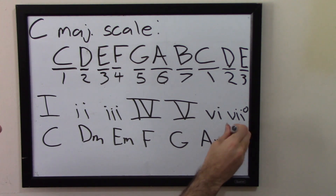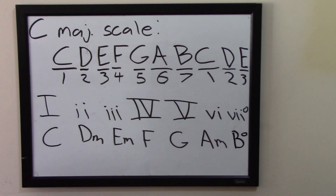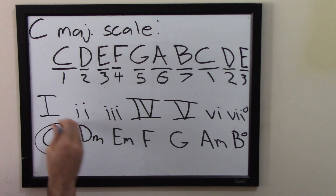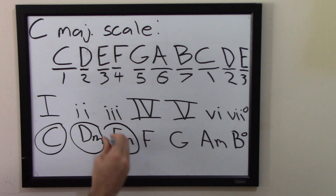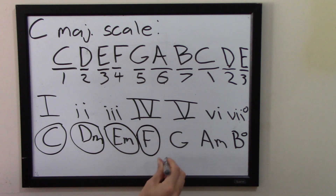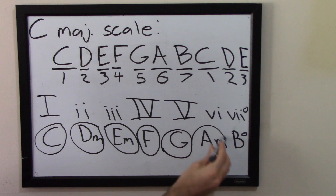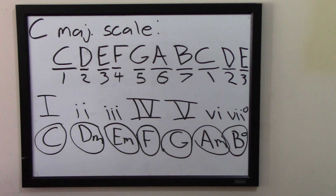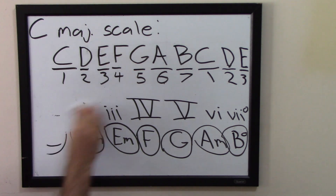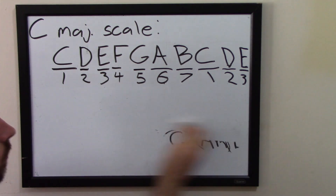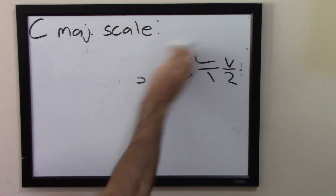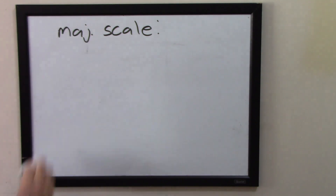To recap: starting on the 1st, 2nd, 3rd, 4th, 5th, 6th, and 7th notes of the C major scale got us C major, D minor, E minor, F major, G major, A minor, and B diminished. If I play all of those in order, it sounds like this. Notice that when we land on that 7 chord, it sounds a bit incomplete — we'll talk about that in the next video. So those are all the triads you can get out of the C major scale.